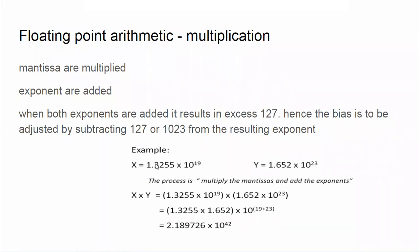So 1.3255 × 10^19 and 1.652 × 10^23 — we are going to multiply these. Normally, how you do multiplication: these two are the mantissa parts, this is the base, and this is the exponent. In multiplication you add the exponents: 19 plus 23 gives 42. Then 1.3255 × 1.652 gives the mantissa result. This is the normal floating point multiplication in decimal, and the same applies for binary.